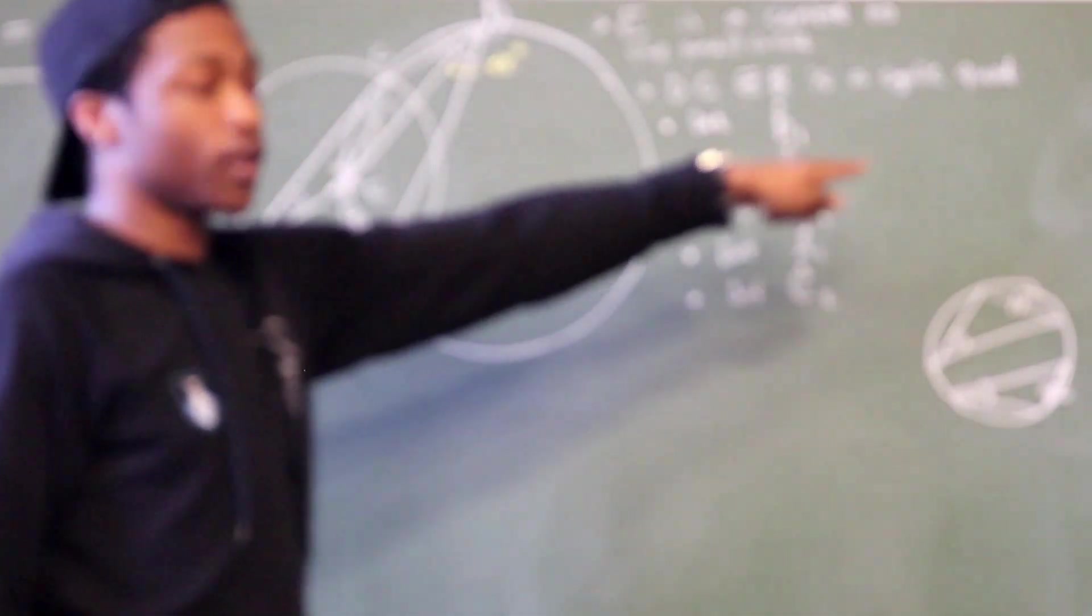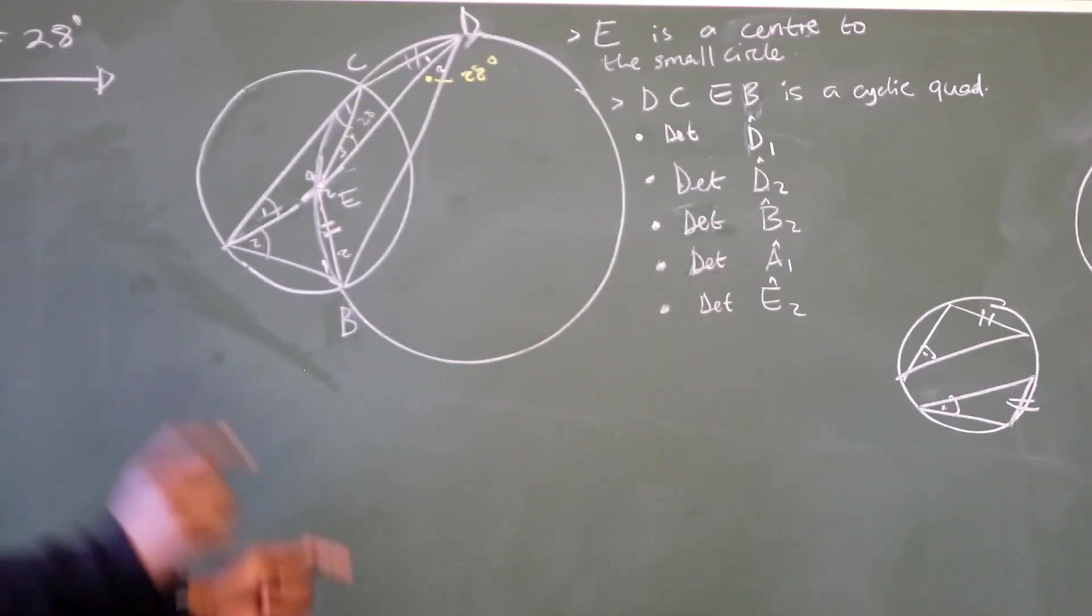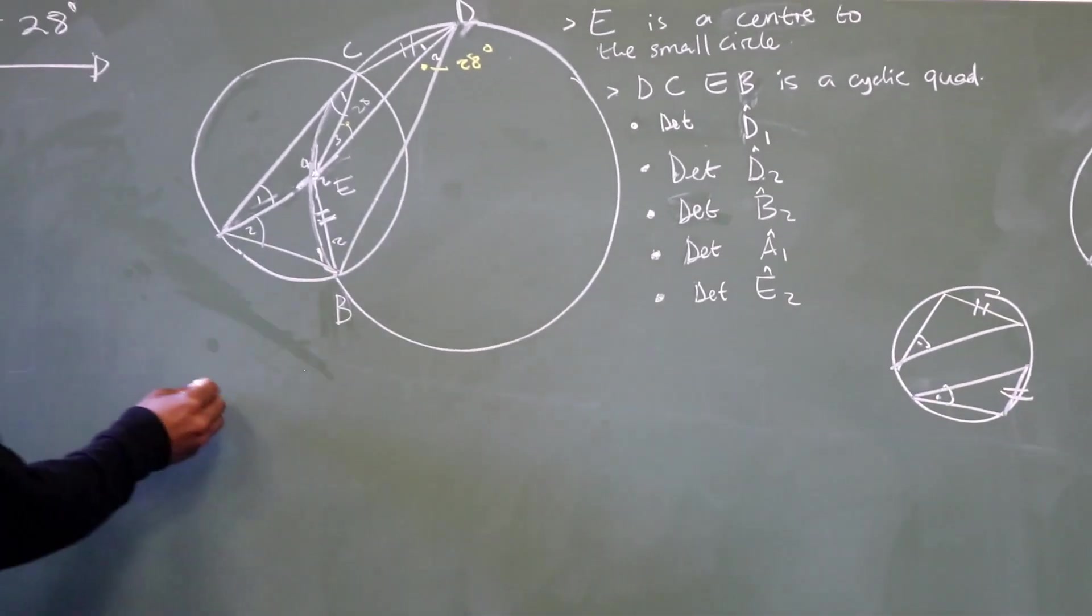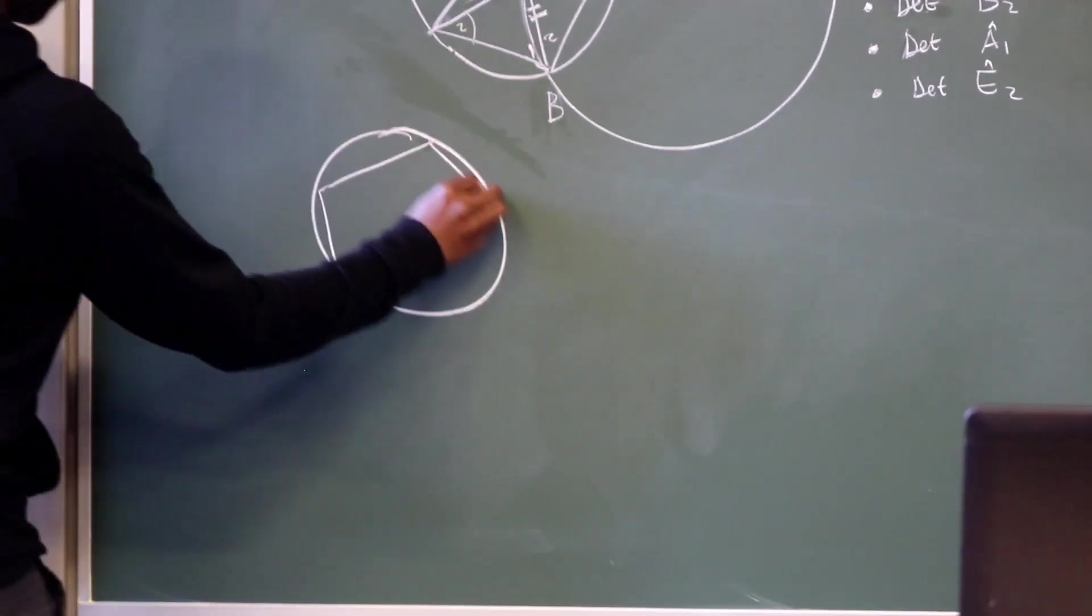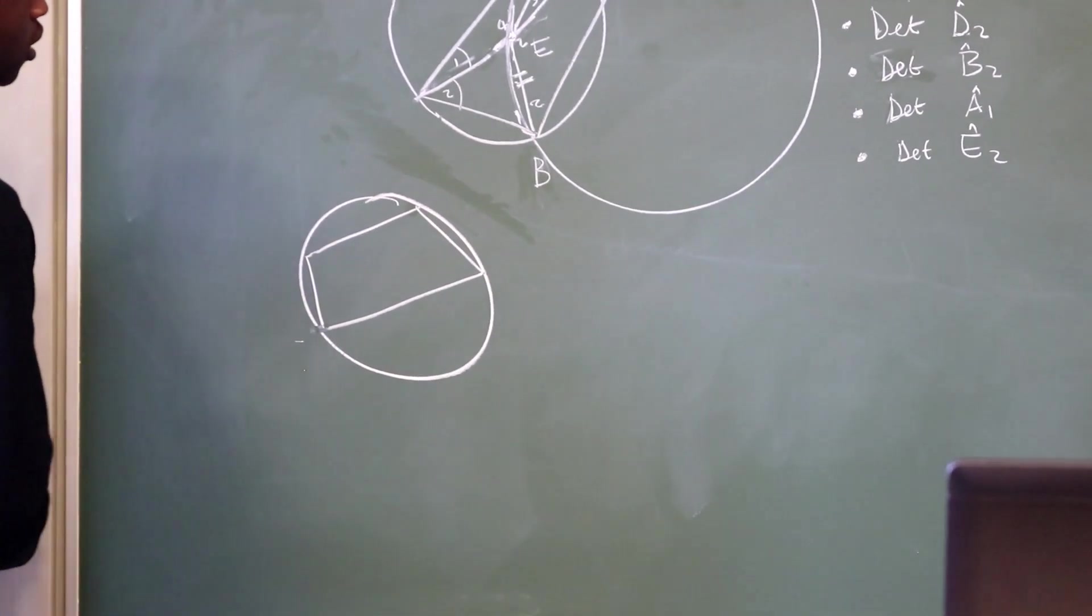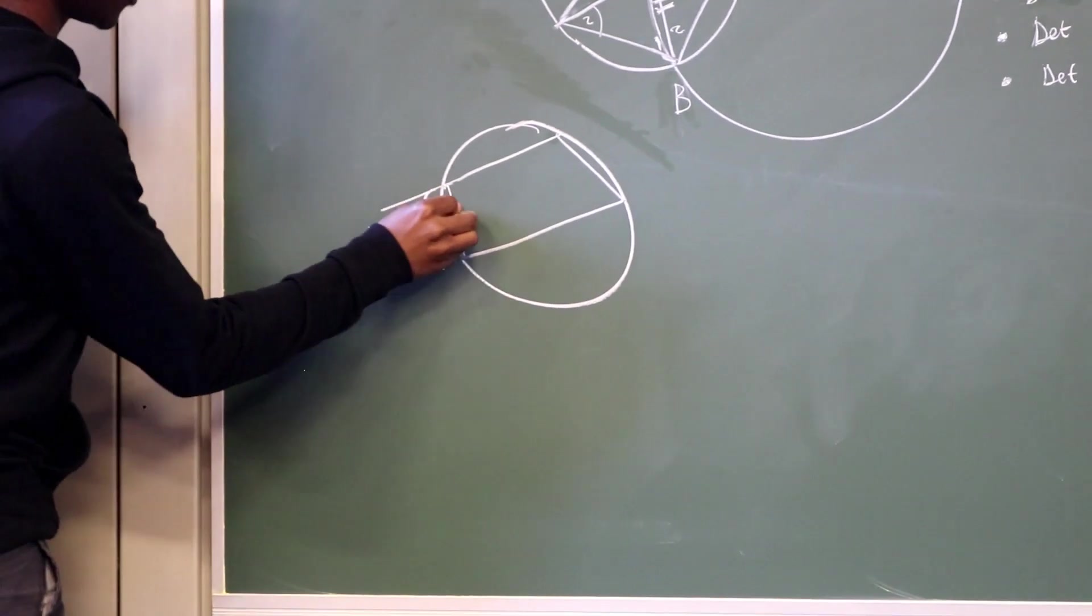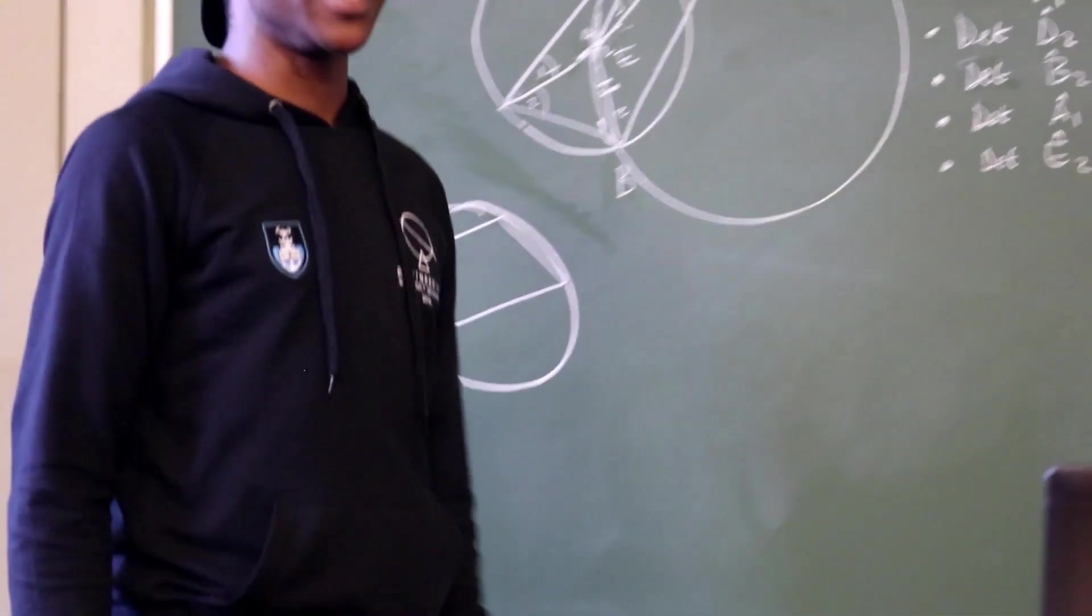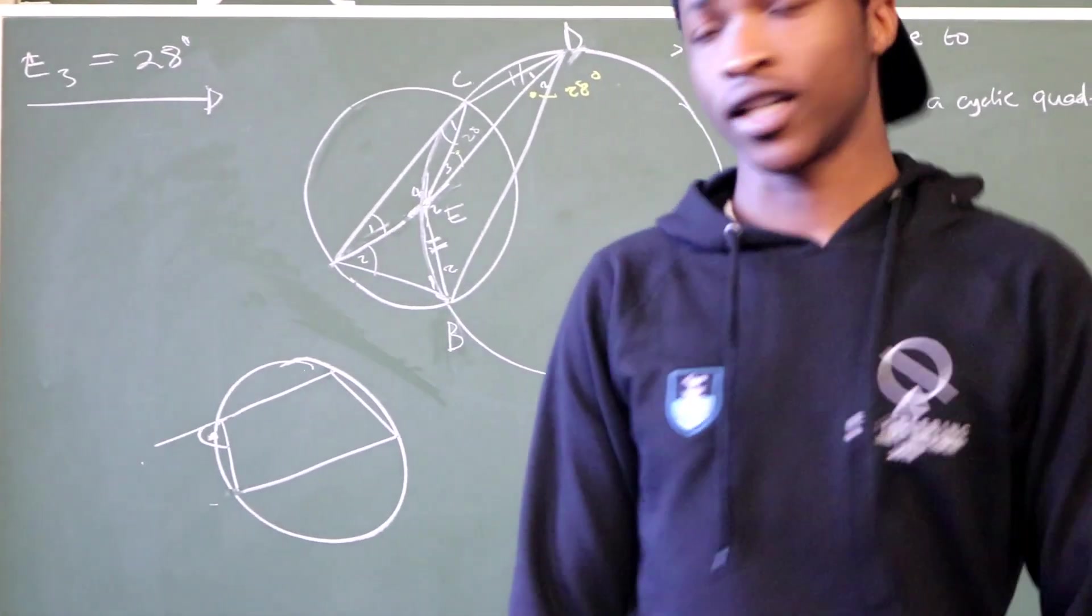We are told that DCEB is a cyclic quad, meaning it is a quadrilateral whose vertices, all its points are touching the circle. And you know that if it's a cyclic quad, the exterior angle of a cyclic quad is equal to the opposite interior angle.